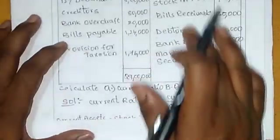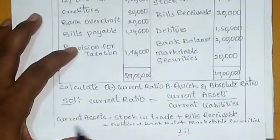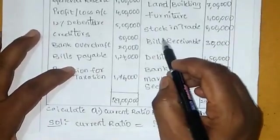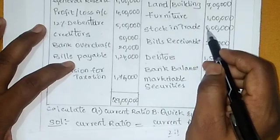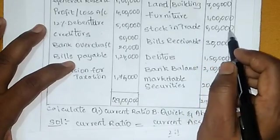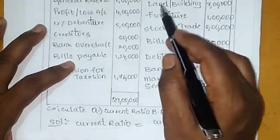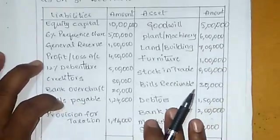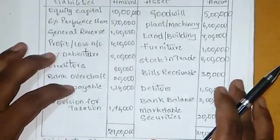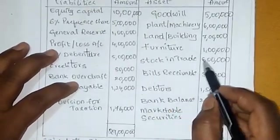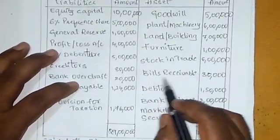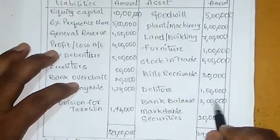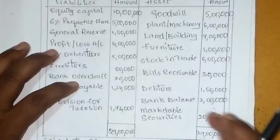Now let's identify the current assets in this problem. Goodwill, plant, land, and furniture are not current assets. The current assets are: stock in trade, bills receivable, debtors, bank balance, and marketable securities — five current assets in total.